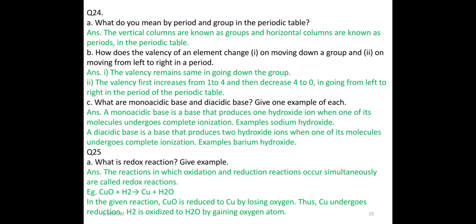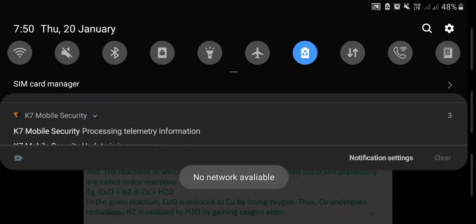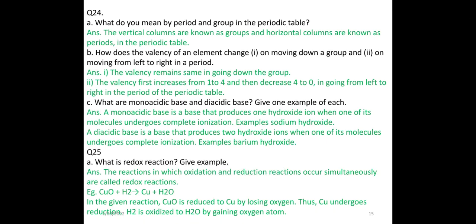What is a monoacidic base and a diacidic base? Give two examples of each. A monoacidic base is a base that produces one hydroxide ion when one of its molecules undergoes complete ionization. For example, sodium hydroxide. A diacidic base is a base that produces two hydroxide ions when one of its molecules undergoes complete ionization. For example, barium hydroxide.